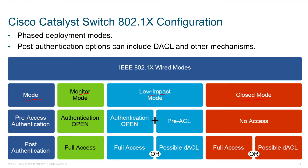In closed mode, you can't do anything but pass EAP traffic. After you authenticate, you can log into the network and do whatever you need — but nothing until you authenticate. That's our goal, that's our finish line.